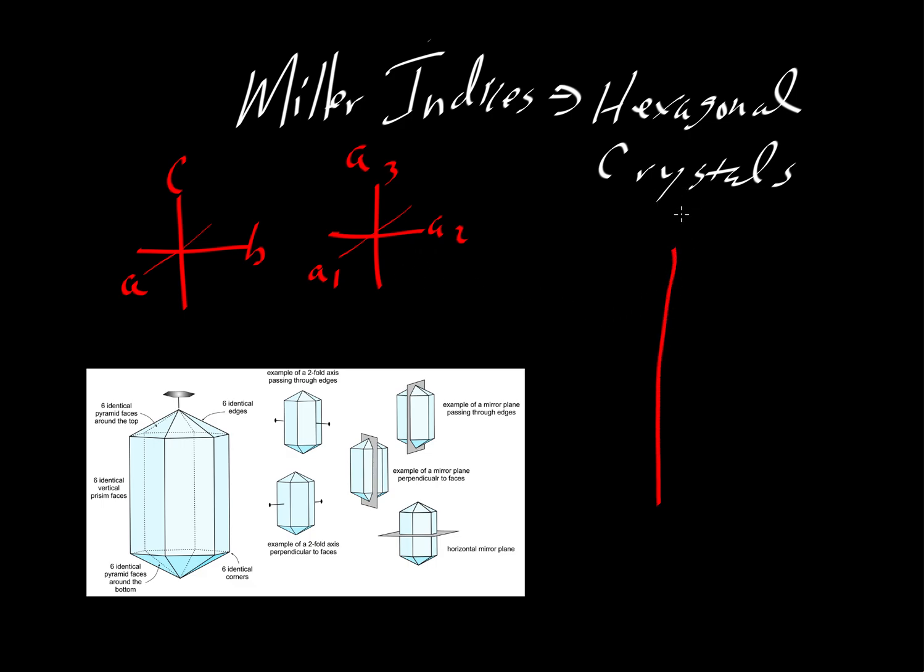we have a little bit different of an arrangement. We have a vertical C-axis, but then we have an A1 coming front to back, and then an A2 left to right, and then an A3 that goes also front to back, but at a different angle. So we've got four axes total instead of three, so that's a little bit different.